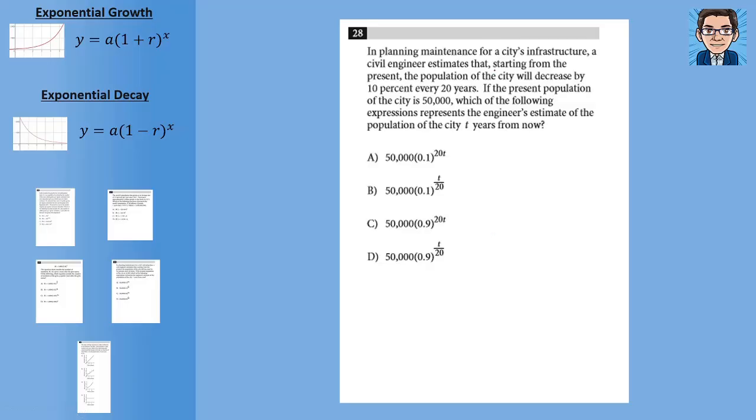Okay, here in planning maintenance for a city's infrastructure, a civil engineer estimates that starting from the present, the population of the city will decrease by 10% every 20 years. So decrease by 10% every 20 years, that tells us it's going to be exponential decay. The present population is 50,000, so that's our starting point. And then this is the tricky part of this one, is that that's for every 20 years.